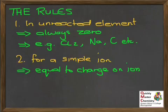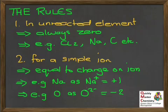Second rule relates to simple ions, and here the rule is that the oxidation state will be equal to the charge on the ion. So, taking a couple of examples, what's the oxidation state of sodium in the Na plus ion? It's plus one. And for oxygen as an oxide ion, O2 minus, it's minus two.